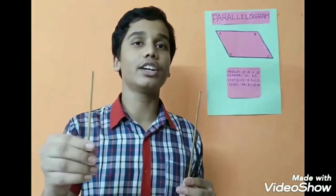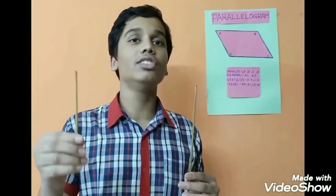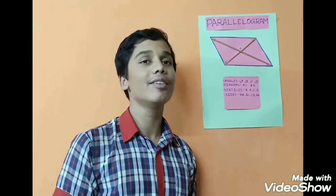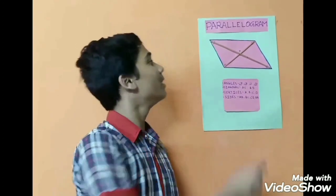As you can see, I have two sticks — one is 24 cm and another is 15 cm. We join them in a parallelogram shape to understand diagonals. These are the diagonals of a parallelogram.